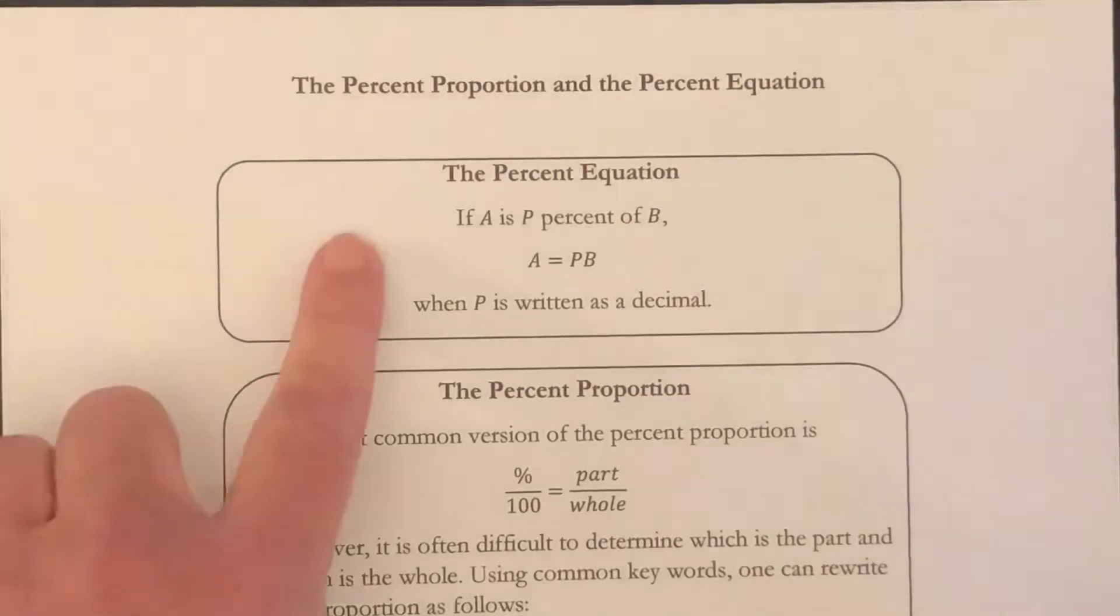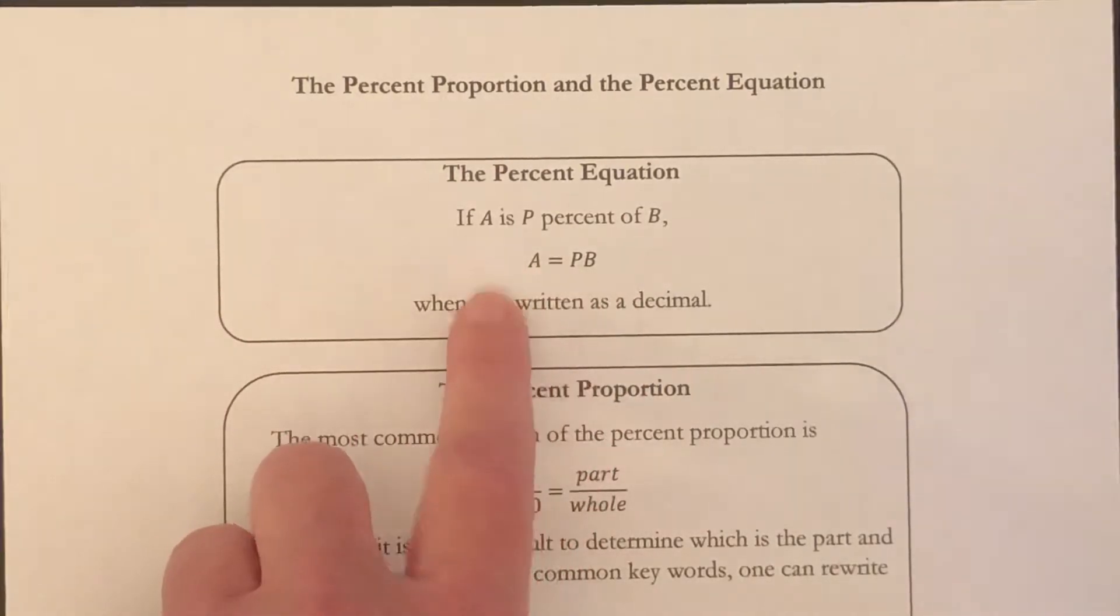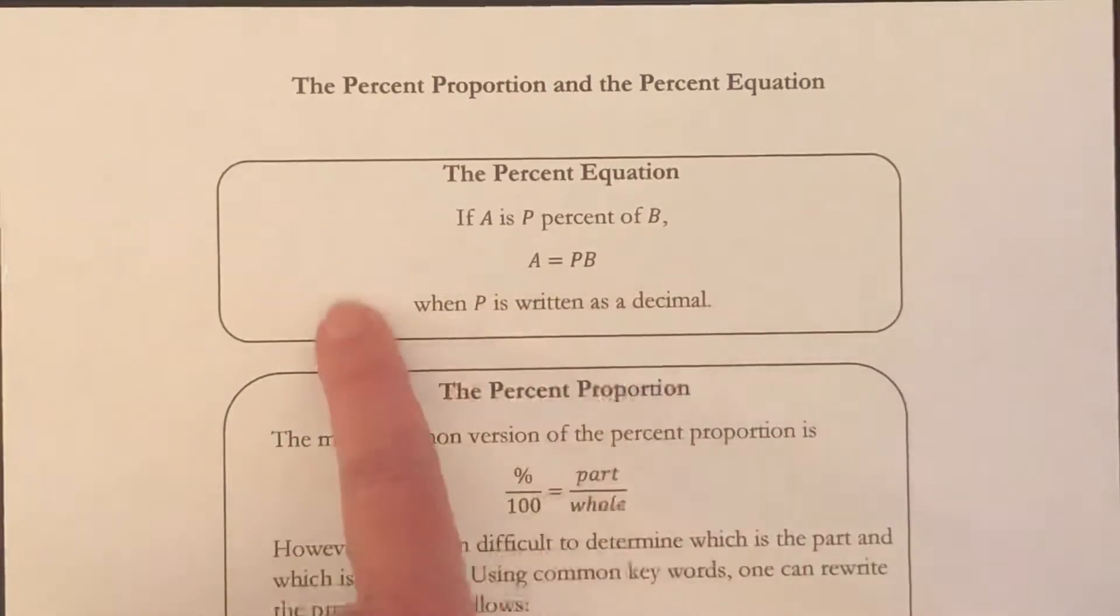Your book talks about the percent equation all the time, and it says if A is P percent of B, then you have this formula. A equals P times B, and P, your percent, is going to be written as a decimal.